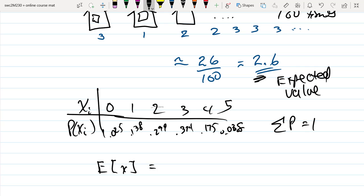The expected value of a random event is zero times the 0.025, the one times the 0.138, the two times the 0.299—it's the random value times the probability or the frequency of that random value.